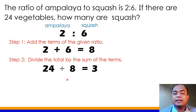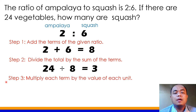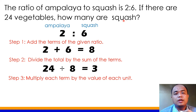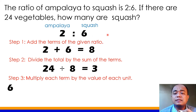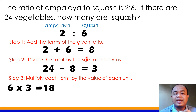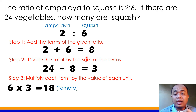Step 3: multiply the term by the quotient. Balik tayo sa problem — squash ang tinatanong, so yung 6 lang ang imultiply natin. 6 times 3 equals 18. So sa 24 na vegetables, 18 ang squash. That's the final answer.